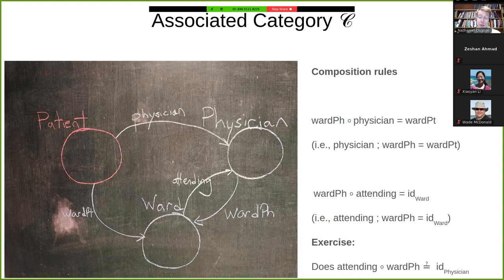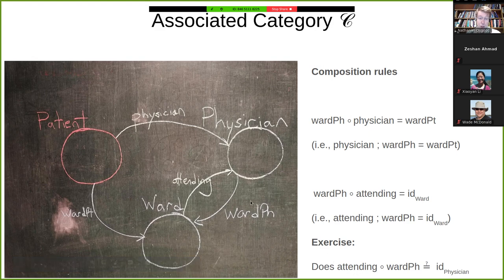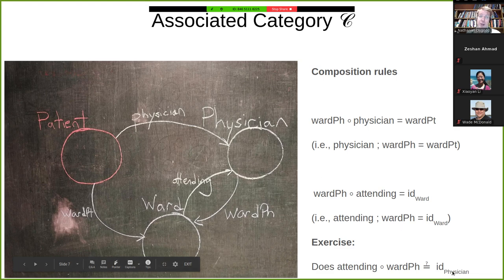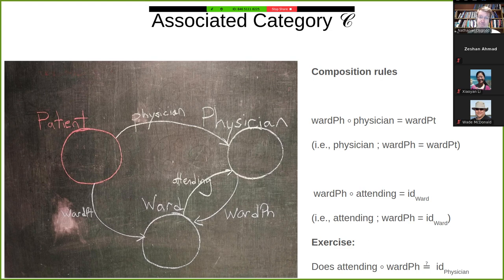All other composition rules not constrained through this are free to differ. Let's consider a situation where we have a physician and we ask what ward they're in, and then ask who the attending is. Does that have to be the same as the identity for that physician? In general, the answer is no. There's nothing in our database that we want to impose that constraint. We want to allow for wards with multiple physicians. Only one of them is the attending.